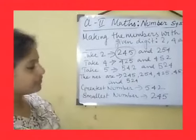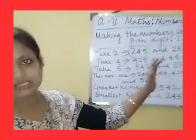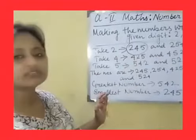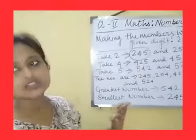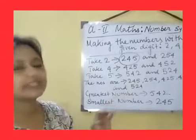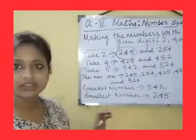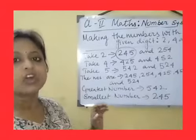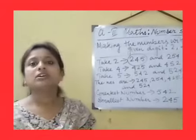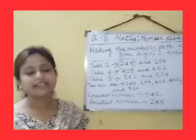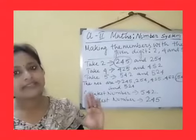So from these digits we formed numbers, found the greatest number and the smallest number. From these numbers we can also find the ascending order and the descending order. Hope you have understood today's class. We will proceed with the number system again in the next class. Bye bye, see you again.